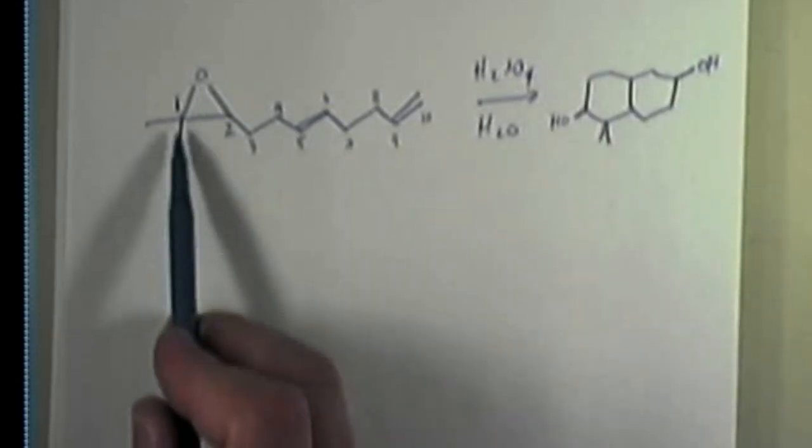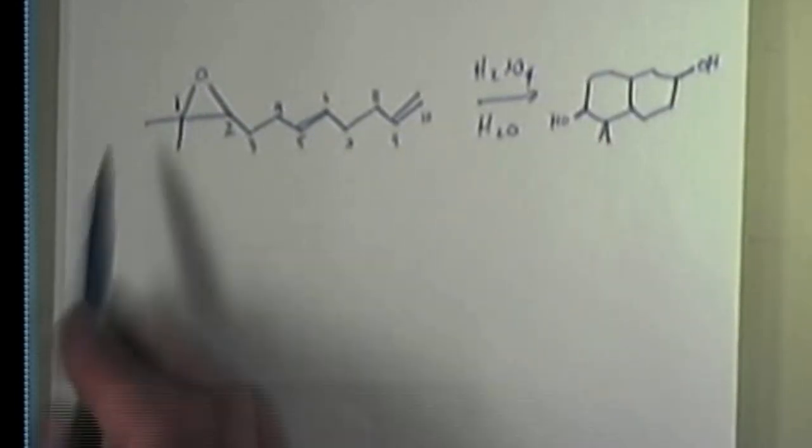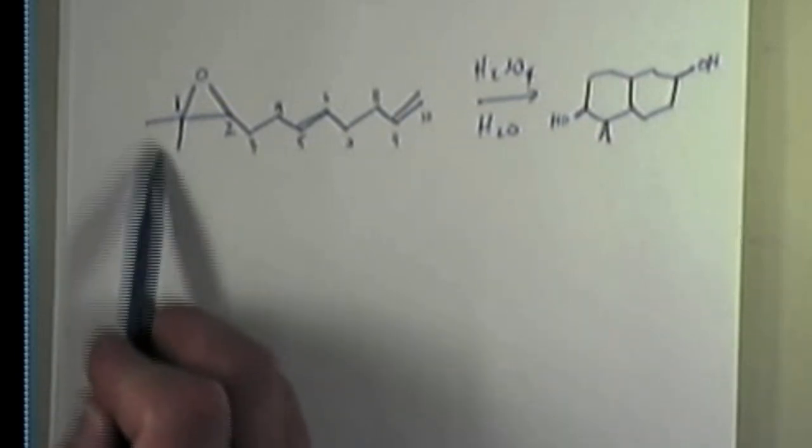You can see that carbon-1, for example, that is a carbon that has two CH3s coming off of it. You see that? Yes, I hope you can see that over here, this guy right here has to be carbon-1. Does that make sense?